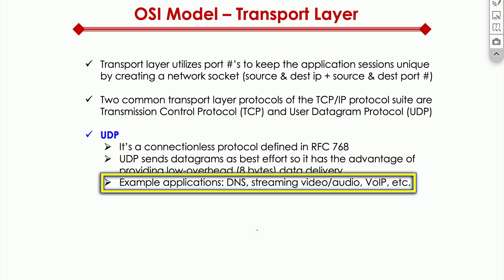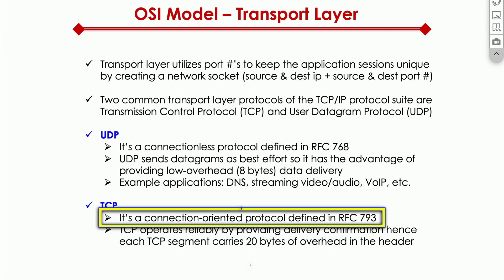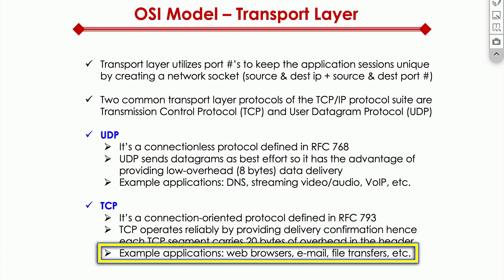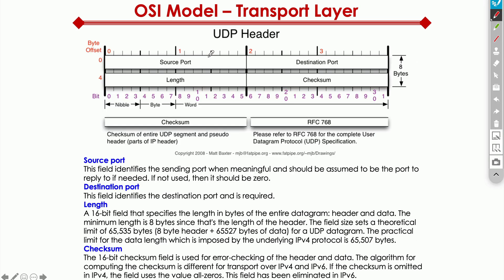Application examples for UDP include DNS, voice, and video. TCP, on the other hand, is a connection-oriented protocol defined in RFC 793. It operates reliably, but it comes at a cost — 20 bytes of overhead in the header. Examples of TCP applications include web browsers, HTTP, email, and file servers.